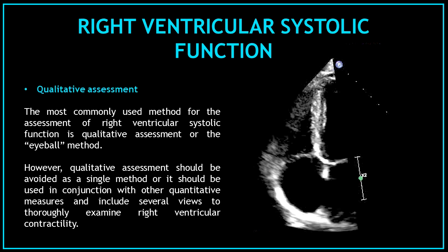The most commonly used method for the assessment of right ventricular systolic function is qualitative assessment, or the eyeball method. However, qualitative assessment should be avoided as a single method — it should be used in conjunction with other quantitative measures and include several views to thoroughly examine right ventricular contractility.